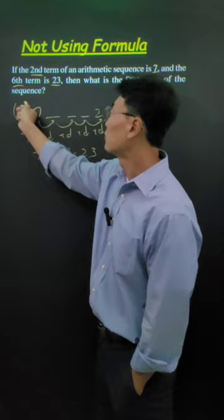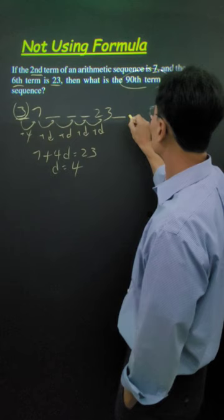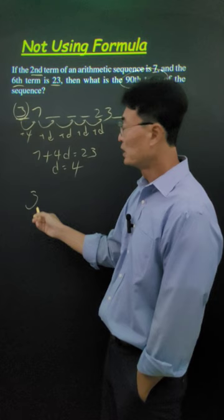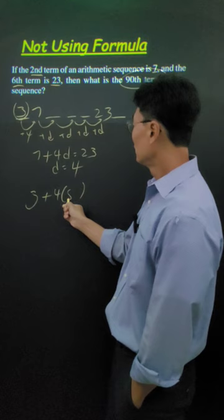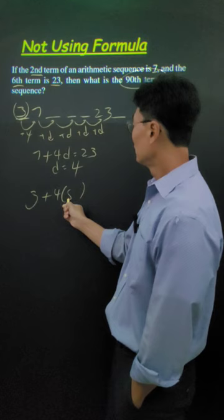To find the 90th term, what we want to do is take the first term plus 4 times the number of d's that we would have, which is 89. And if you work this out, you get 359, making it the 90th term.